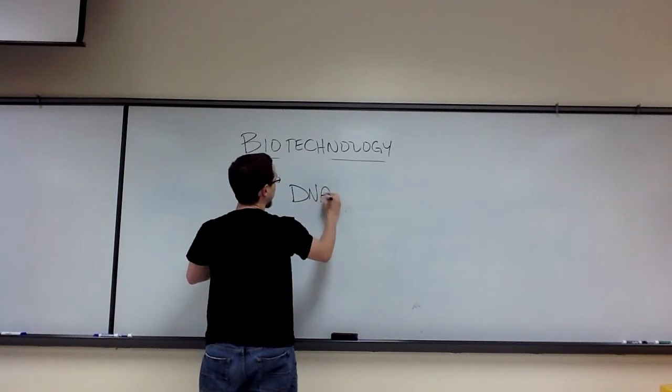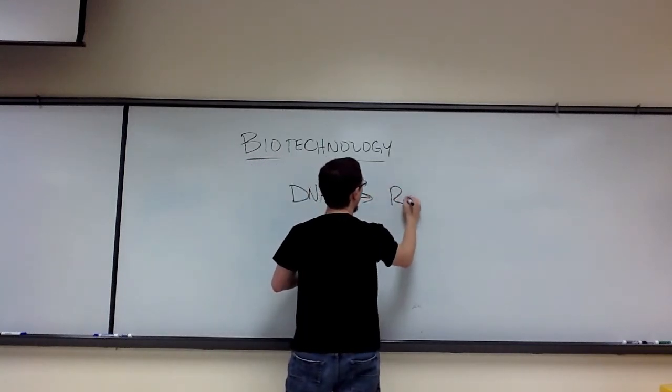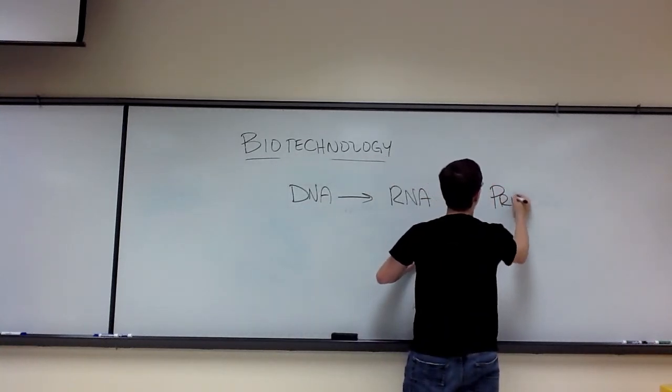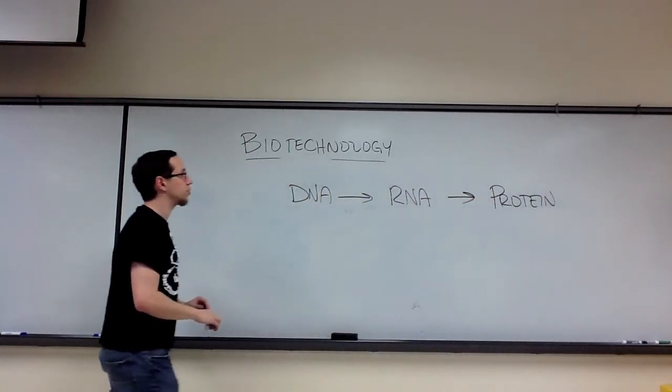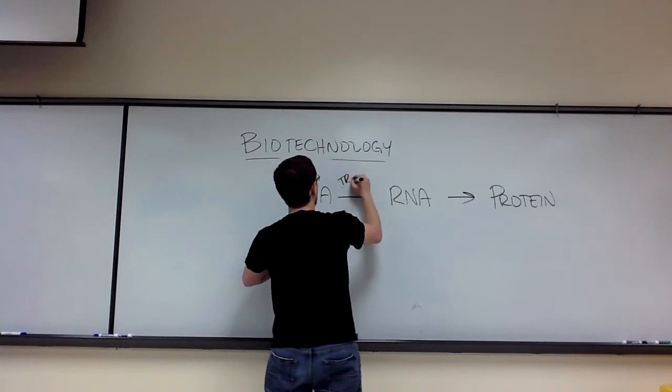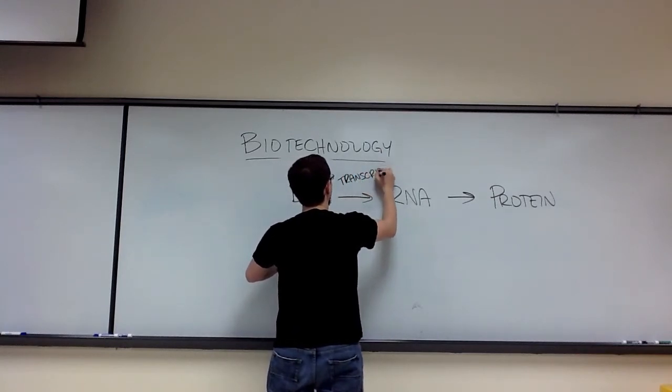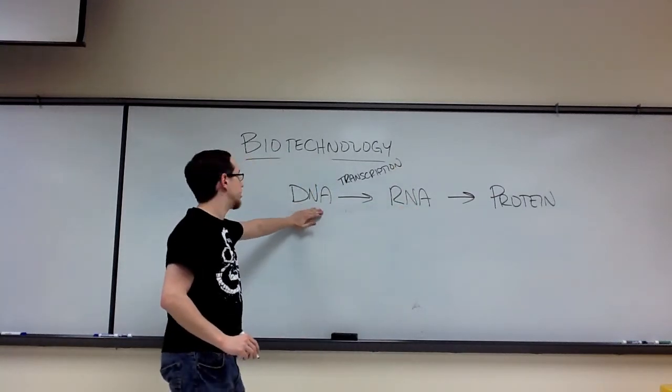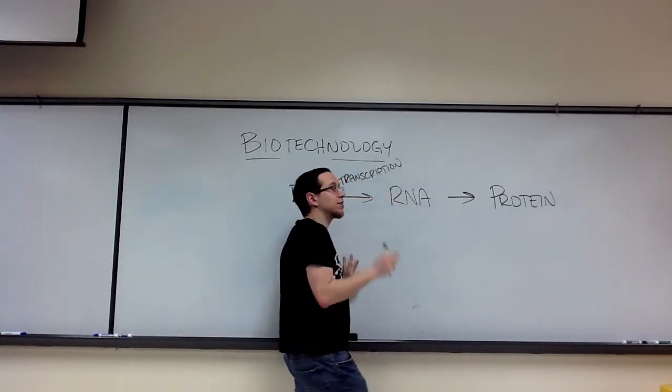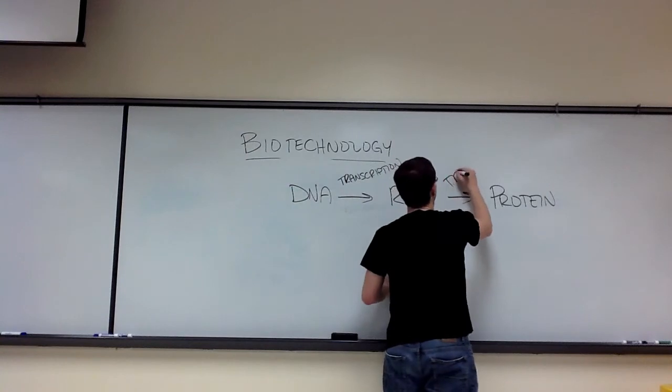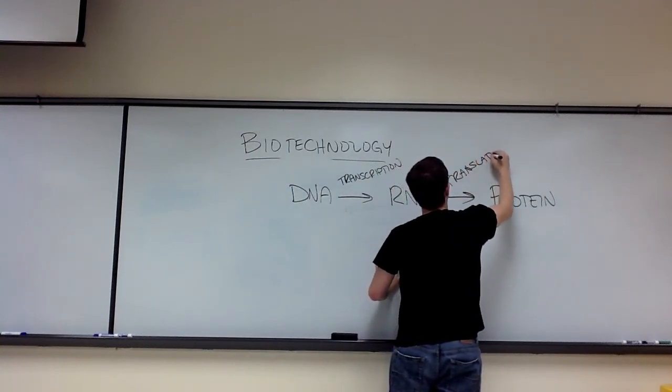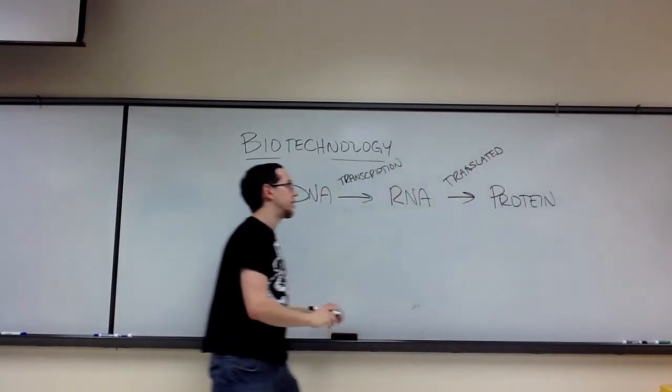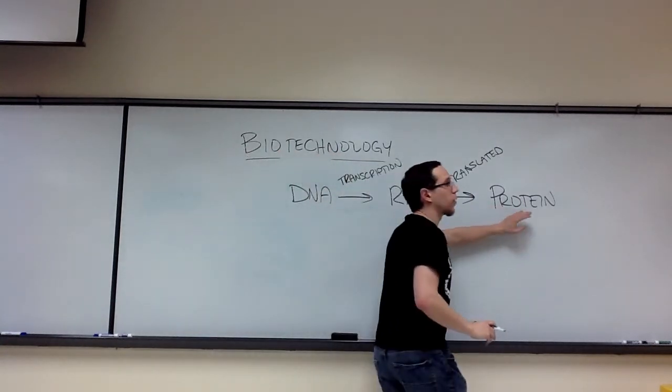So the central dogma of biology states that DNA is used to create a form of RNA, or ribonucleic acid, which in turn is used to create, or synthesize, proteins. Okay, so the central dogma here states that a process called transcription occurs where we generate a molecule of RNA off of a template strand of DNA, and that RNA is then transported into the cytoplasm, where it is translated. That sequence of RNA is translated into an amino acid sequence that makes a polypeptide or a protein.